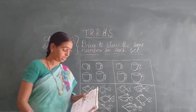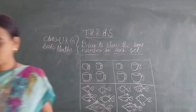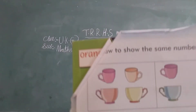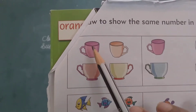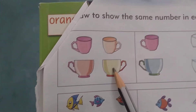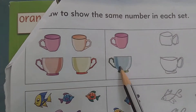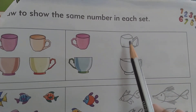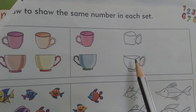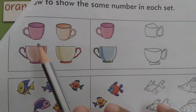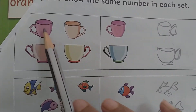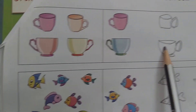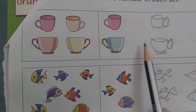Now look at here — I will show you the workbook, children. Look at here. He has given 1, 2, 3, 4 cups and here 1 and 2. So we have to draw more boxes here: 1 and 2. Now count both the boxes: 1, 2, 3, 4 and 1, 2, 3, 4. Same!